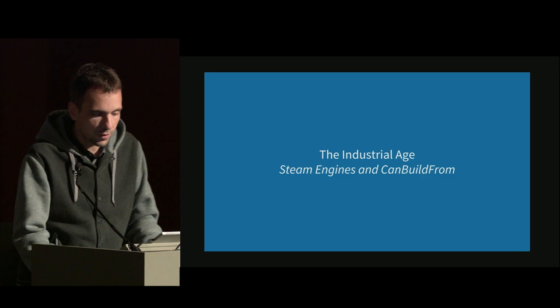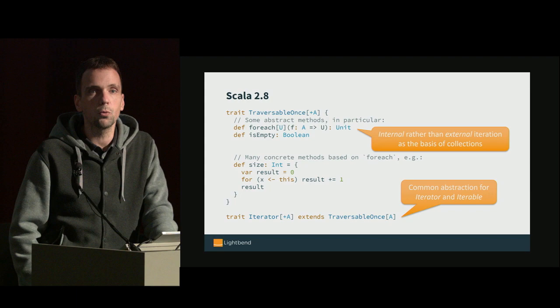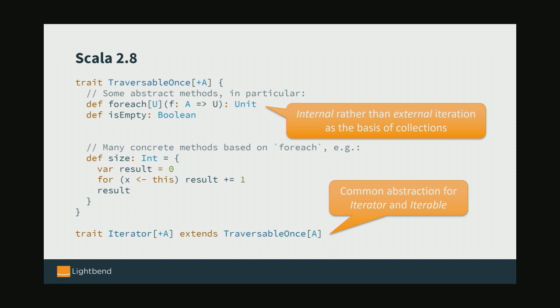Moving on to the industrial age with steam engines and CanBuildFrom, which was a big new thing: Scala 2.8 got a complete redesign of the collections library. The first thing you'll notice is that the inheritance hierarchy now starts at a trait called TraversableOnce.